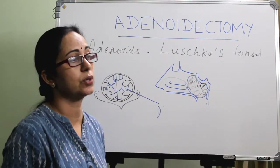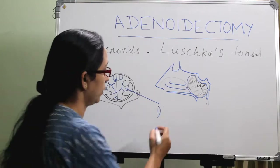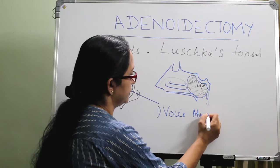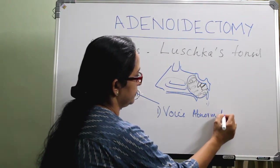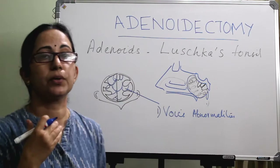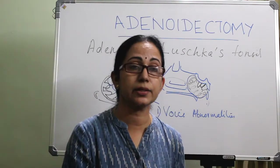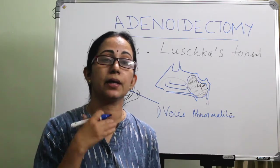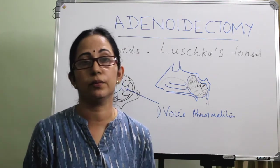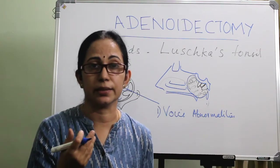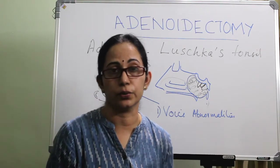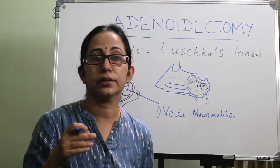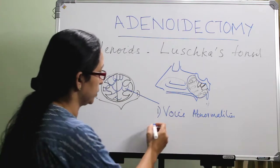The voice change it causes is rhinolalia clausa. Sometimes the voice abnormality is described by parents as frequent clearing of the throat, because postnasal drip is coming and making a film over the vocal cords, so the patient has to clear the throat frequently. And because the nose is blocked, the child will breathe through the mouth — mouth breathing.